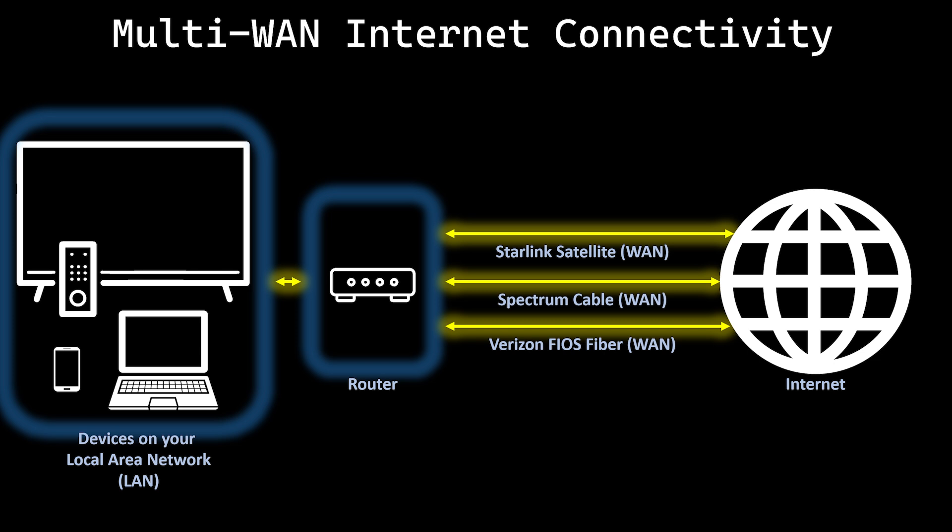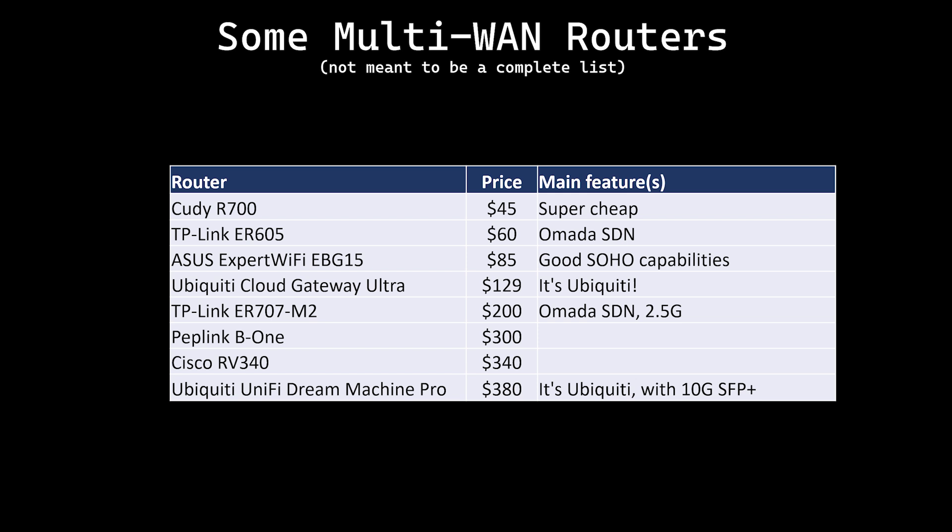To do something useful with multiple internet connections you need a router that supports multiple WAN connections. Most people don't have a router with this functionality, but that doesn't mean getting one is expensive. You can get a decent multi-WAN router for as little as $45. I have a Ubiquiti Dream Machine Pro which costs about $380. Most consumer multi-WAN routers are somewhere between those two price points — I've put some of them in this table and in the video description for your reference.